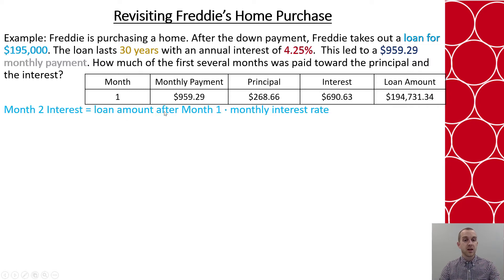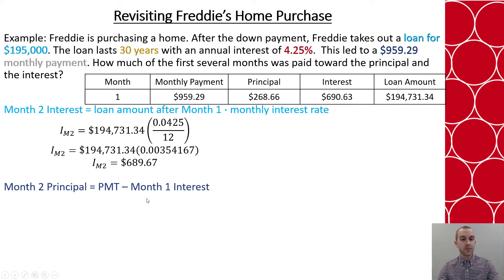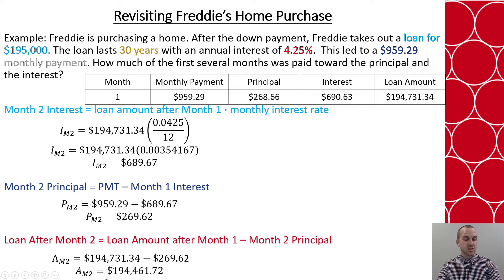In month two, the difference is that the loan amount has shrunk just a little bit. So now when I'm figuring out the monthly interest, it's using that new loan amount. I multiply those two values together, and you can see the interest got a little bit smaller this next month, which means that if I look at my overall payment and remove the interest, a little bit more goes towards the principal. That means I now remove a little bit more from my loan — I subtract my new amount of principal and I'm down just a little bit more. I keep doing this process over and over again.